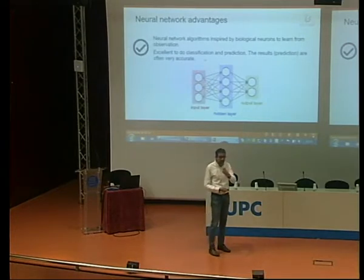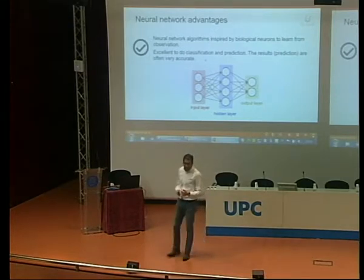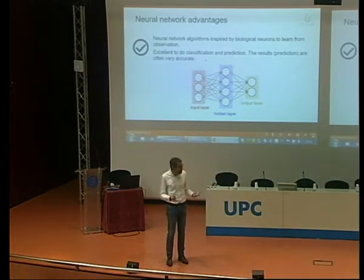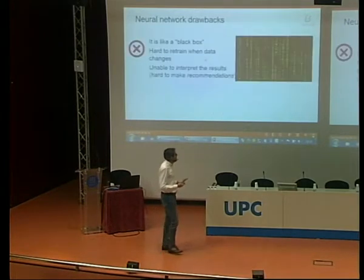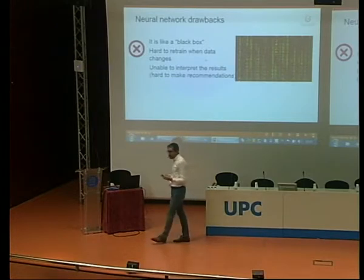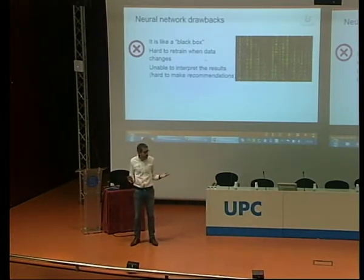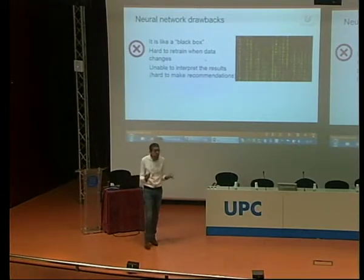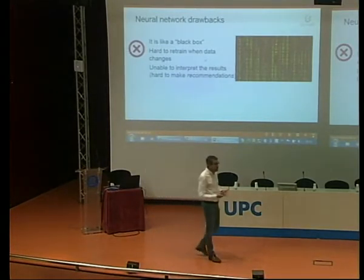On the other side of the story, neural networks are fantastic in terms of accuracy — algorithms based on observation that you can train. But what are the issues? It's a black box. When you have a prediction from a neural network algorithm, it's almost impossible to know what you're going to recommend because you don't know exactly what sequence led to that prediction. This is really hard.